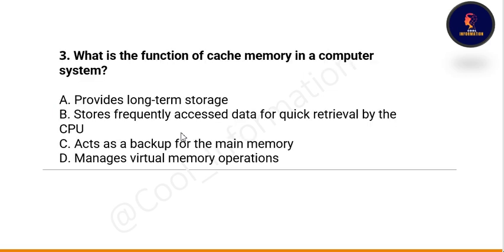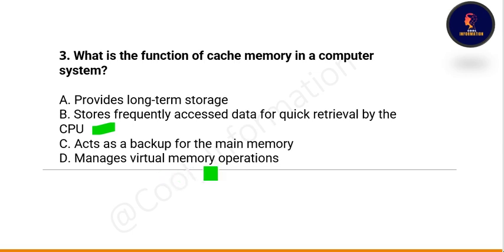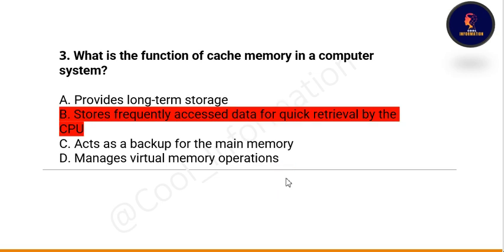Next question: what is the function of cache memory in a computer system? Option A: provides long-term storage. Option B: stores frequently accessed data for quick retrieval by the CPU. Option C: acts as a backup for the main memory. Option D: secondary memory. The correct option is B — stores frequently accessed data for quick retrieval by the CPU.